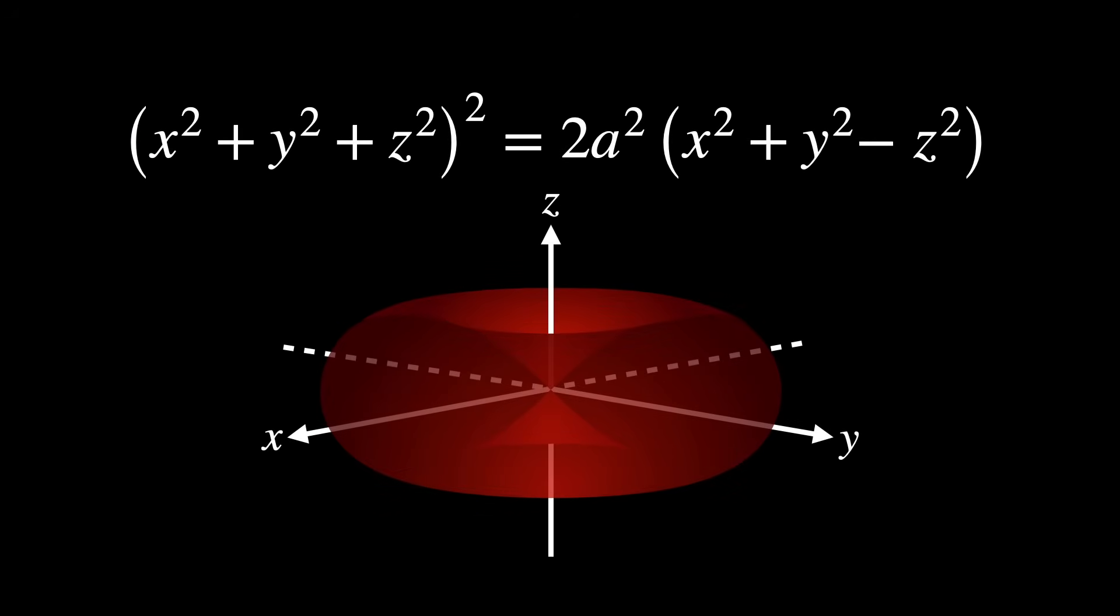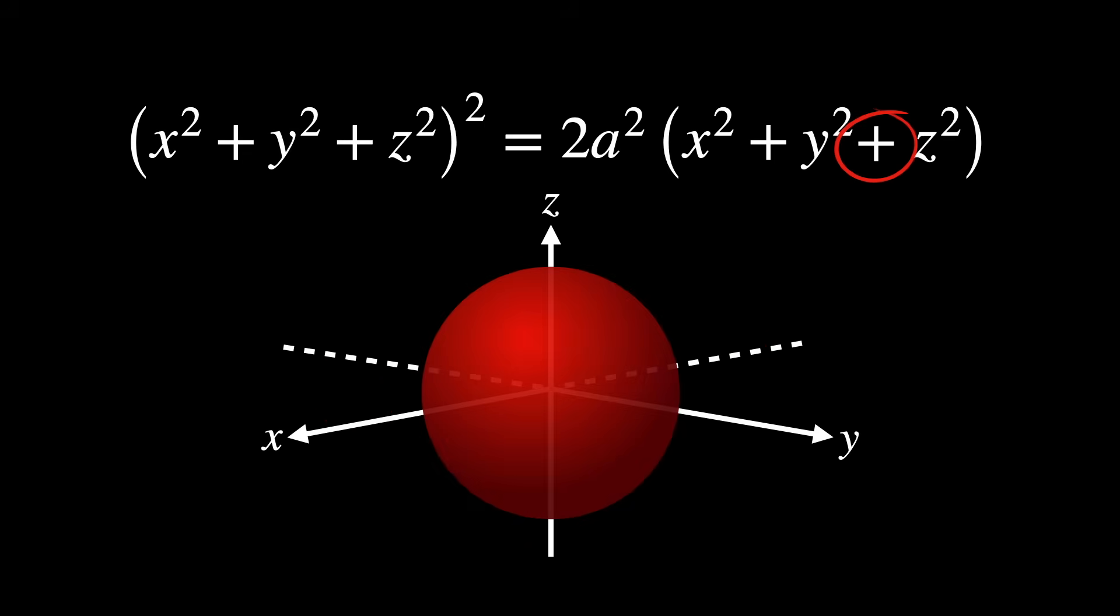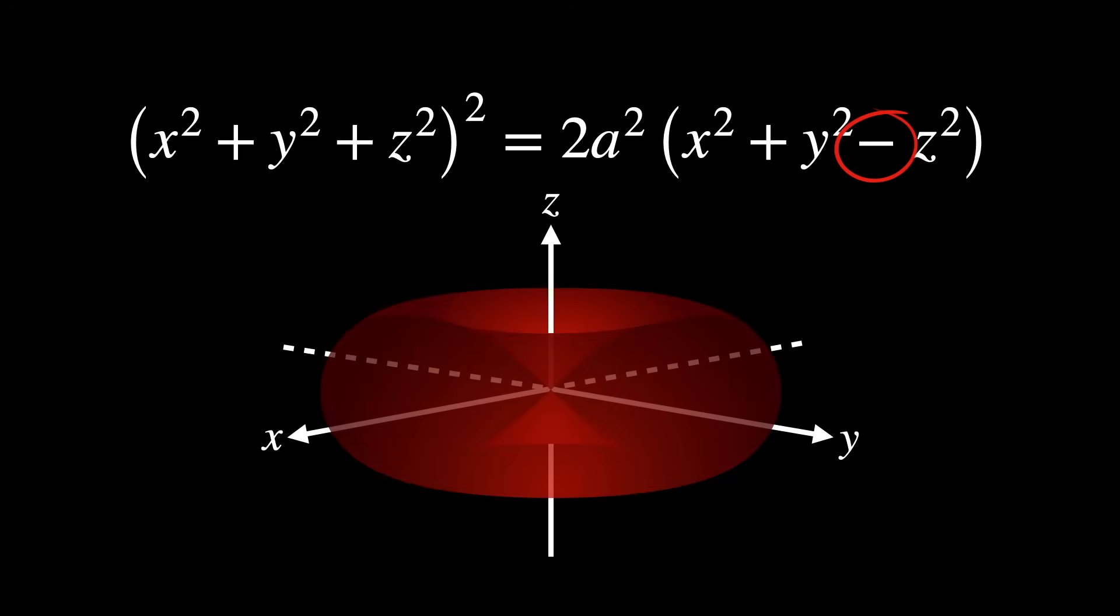However, if we change this quartic formula slightly, changing the sign in front of z-squared in the right-hand side from negative to positive, we get a sphere. So, this changing sign from positive to negative is exactly what creates the non-orientability of the surface.